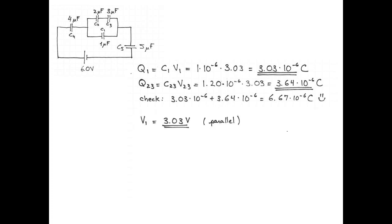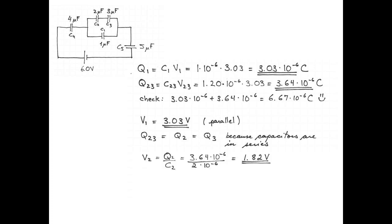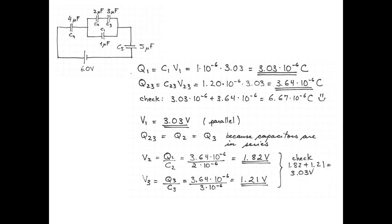The potential difference across capacitor 1 is 3.03 volts. Since capacitors 2 and 3 are in series, they carry the same charge of 3.64 microcoulombs. The potential difference across capacitor 2 is 3.64 microcoulombs divided by 2 microfarads, giving 1.82 volts. The potential difference across capacitor 3 is 3.64 microcoulombs divided by 3 microfarads, giving 1.21 volts. Check: 1.82 plus 1.21 equals 3.03 volts. Awesome!